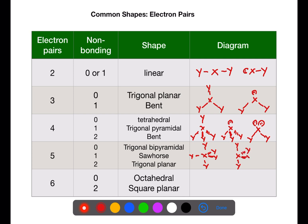If two of the pairs are non-bonding, you will make a trigonal planar shape for your molecule, as this allows the two non-bonding pairs to be as far apart from each other as possible at 180 degrees. If you have six electron pairs and none of them are non-bonding, you will have an octahedral shape for your molecule. If two of them are non-bonding, you will make a square planar shape for the molecule, as this allows the two non-bonding pairs to be 180 degrees apart. Remember, non-bonding pairs have higher repulsion than bonding pairs of electrons and will need to be as far apart as possible.